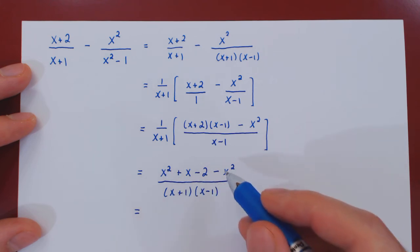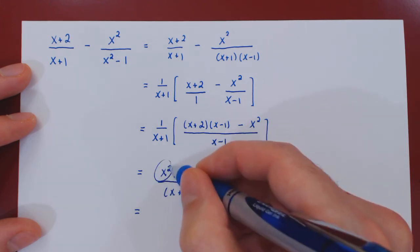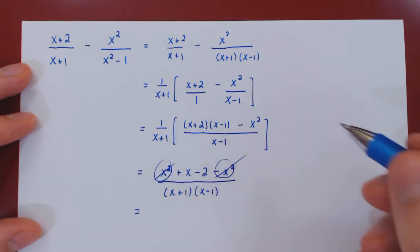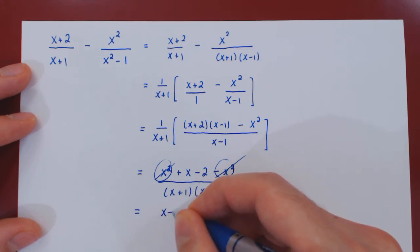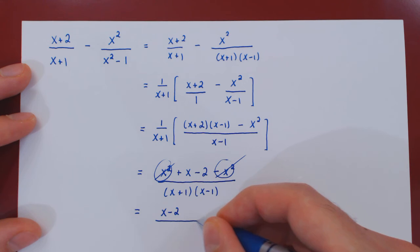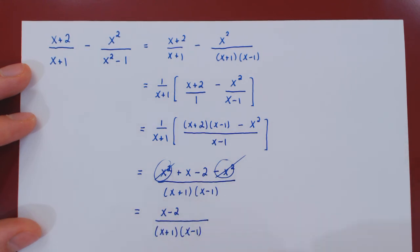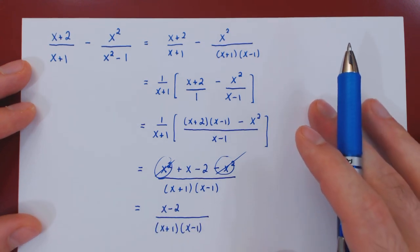Obvious cancellation, x squared minus x squared cancels out, and we're left with quite simply x minus 2 on top over x plus 1 times x minus 1. So everything on top and the bottom is fully factored, and there are no common factors top and bottom, so this is our fully simplified answer. And that's it.